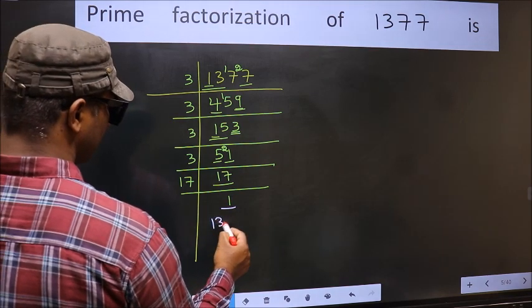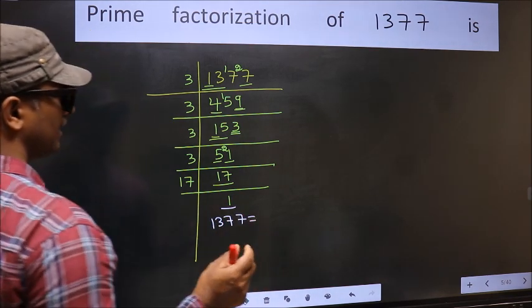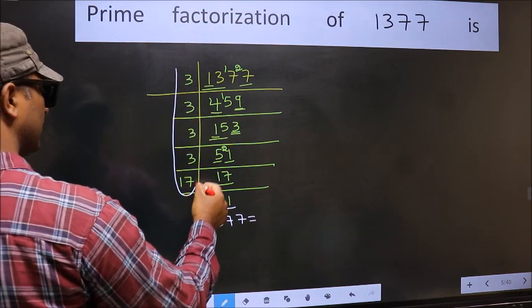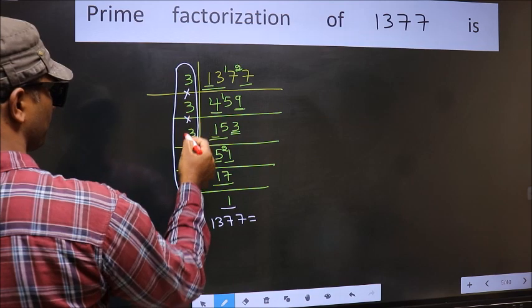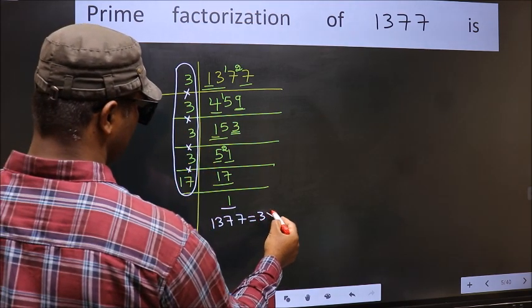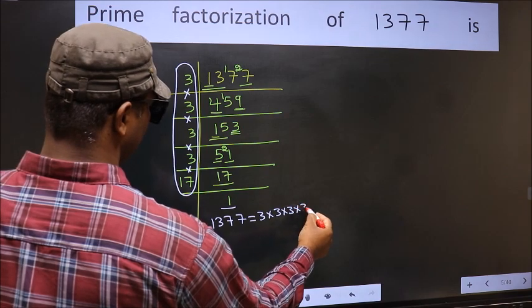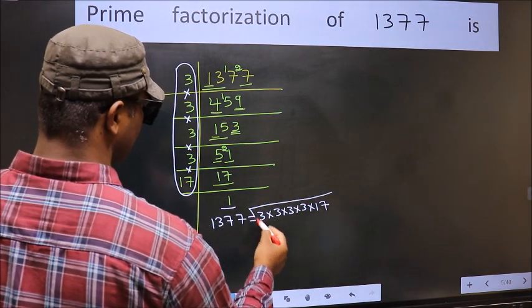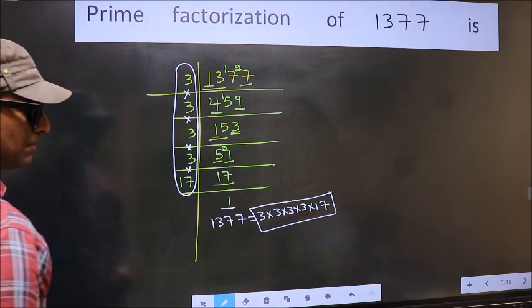So the prime factorization of 1377 is the product of these numbers, that is 3 × 3 × 3 × 3 × 3 × 17. This is the prime factorization of 1377.